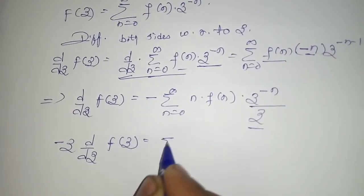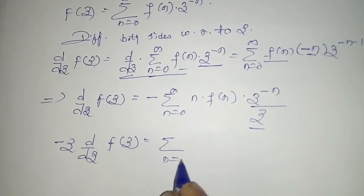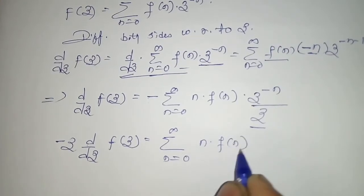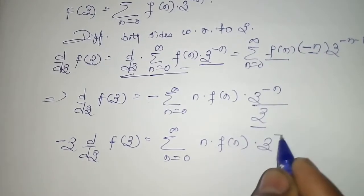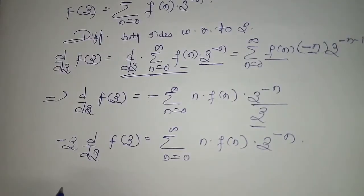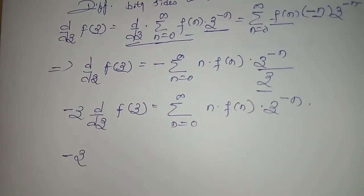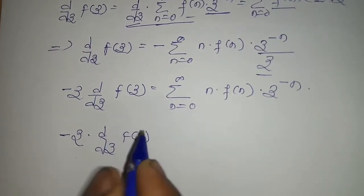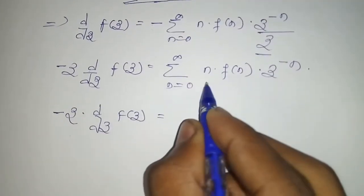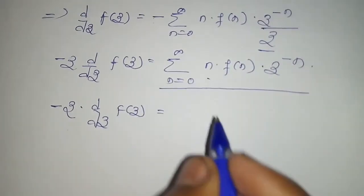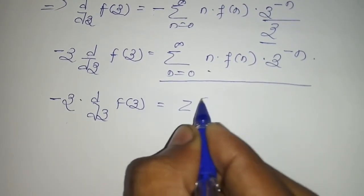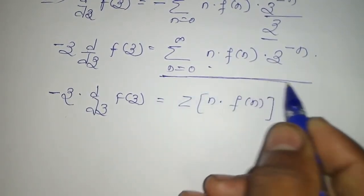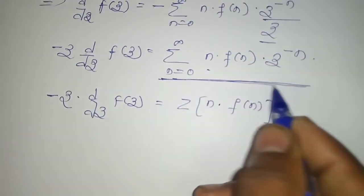So here we can write, summation N equal to 0 to infinity, N, F of N, Z to the power minus N is equal to minus Z into D by DZ capital F of Z. This summation is recognized as the Z-transform of N times F of N, thus completing the proof.